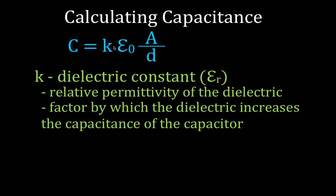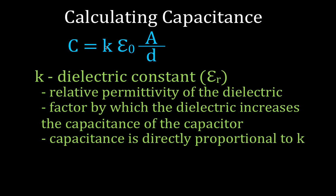If the dielectric constant is 2, the capacitance would be doubled. If the dielectric constant is 3, it would triple the capacitance. The capacitance of the capacitor is directly proportional to K — as K increases, the capacitance increases; as the dielectric constant decreases, the capacitance also decreases.